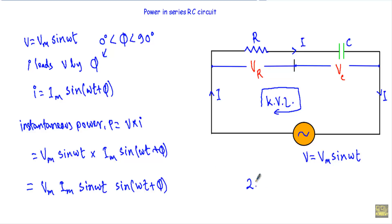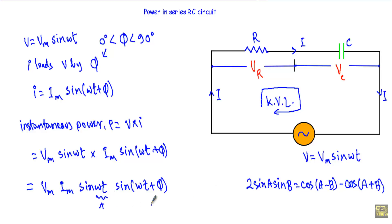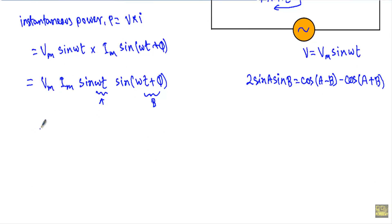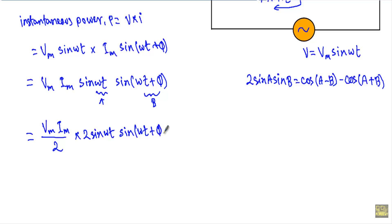You may know this formula: 2 sin(A)·sin(B) equals cos(A − B) minus cos(A + B). Here if I consider ωt as A and ωt + phi as B, to write sin(ωt)·sin(ωt + phi), I will multiply and divide by 2, giving Vm·Im/2 into sin(ωt)·sin(ωt + phi).